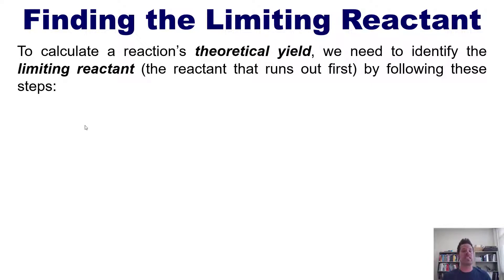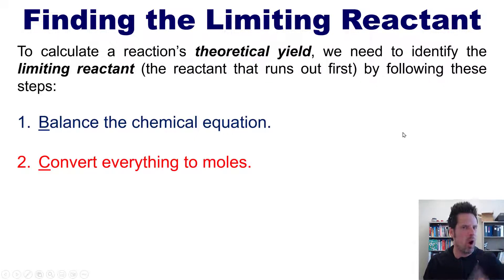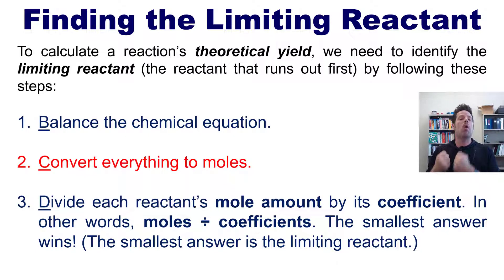In order to do so, you have to follow these steps. One, balance the chemical equation using principles that we discussed in another video that's floating over my head somewhere or linked to in the description below. Two, convert everything to moles. And three, divide each reactant's mole amount by its coefficient. In other words, moles divided by coefficients. Now, when you do this, the smallest numerical answer wins. In other words, the smallest answer is the limiting reactant. Now, you'll notice that the way I've written these steps here gives us the mnemonic BCD, which I made it myself. Balance the chemical equation, convert everything to moles, and divide your mole amounts by coefficients. This process is simple, and it will help you identify your limiting reactant without any mistakes every single time.